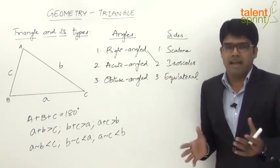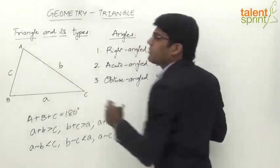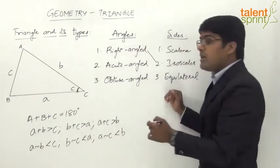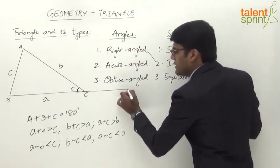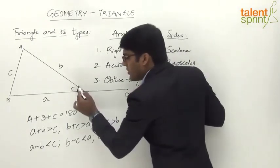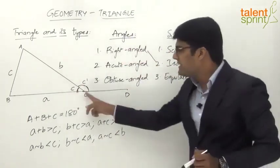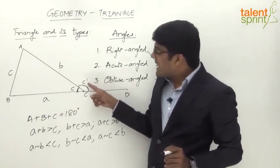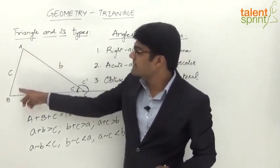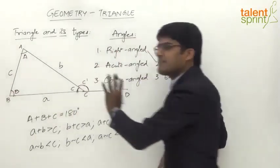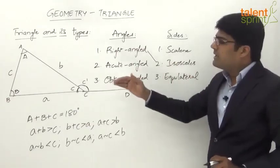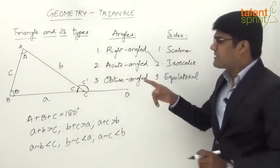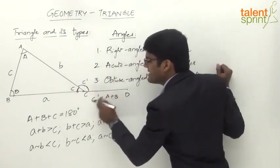Another important concept is the exterior angle. When any one side of a triangle is produced, we get an exterior angle. For example, if side BC is produced to a point D, an exterior angle is formed at vertex C, which we can call C dash. The interior angle at C is angle C. The key point is that exterior angle C dash equals the sum of the other two interior angles, A plus B.